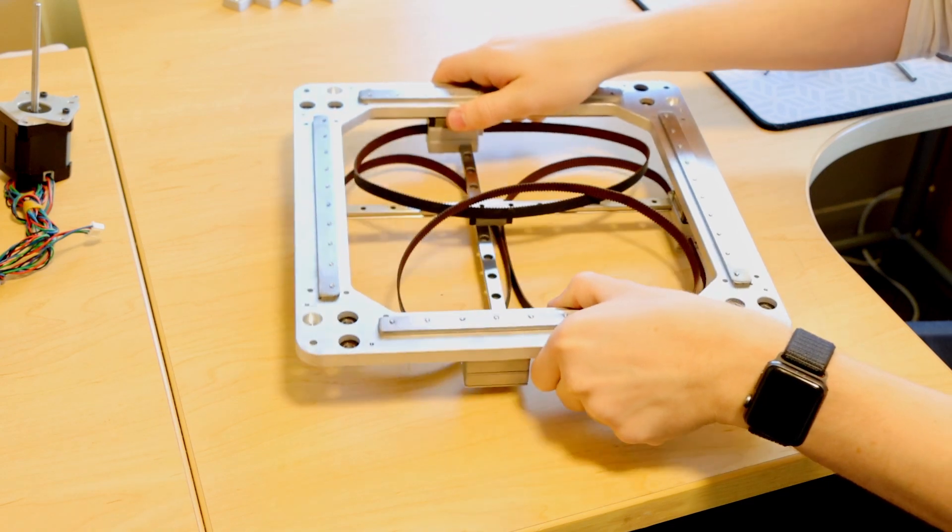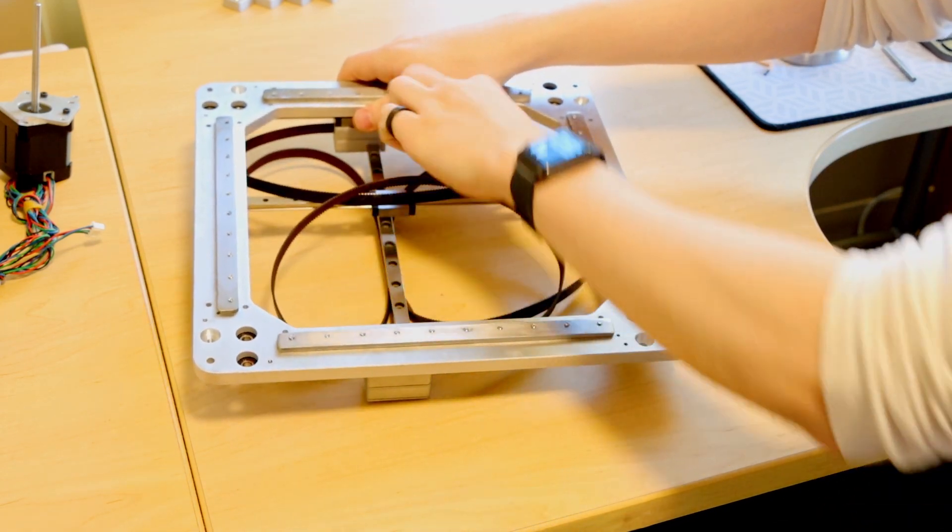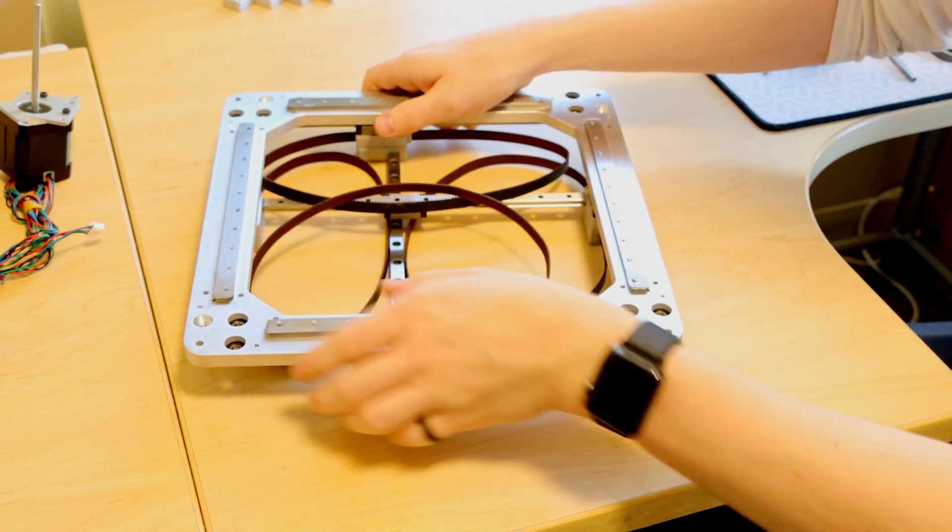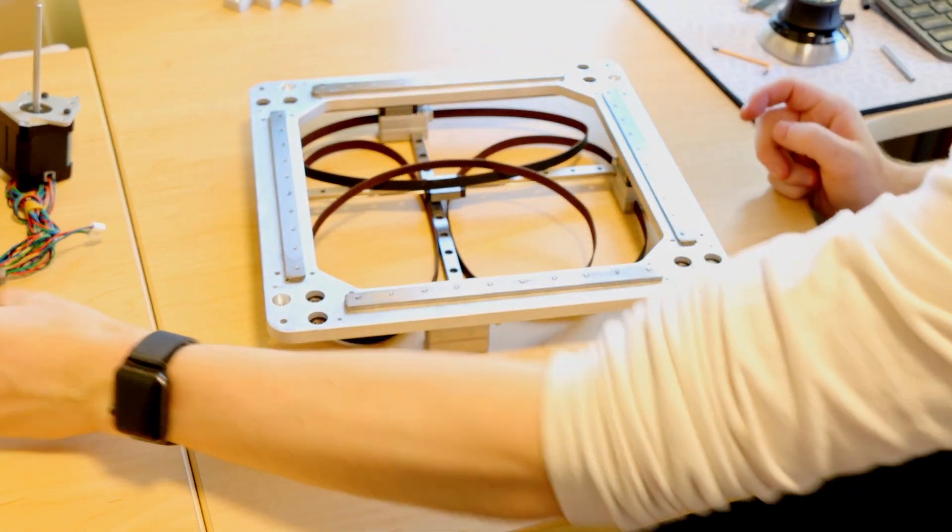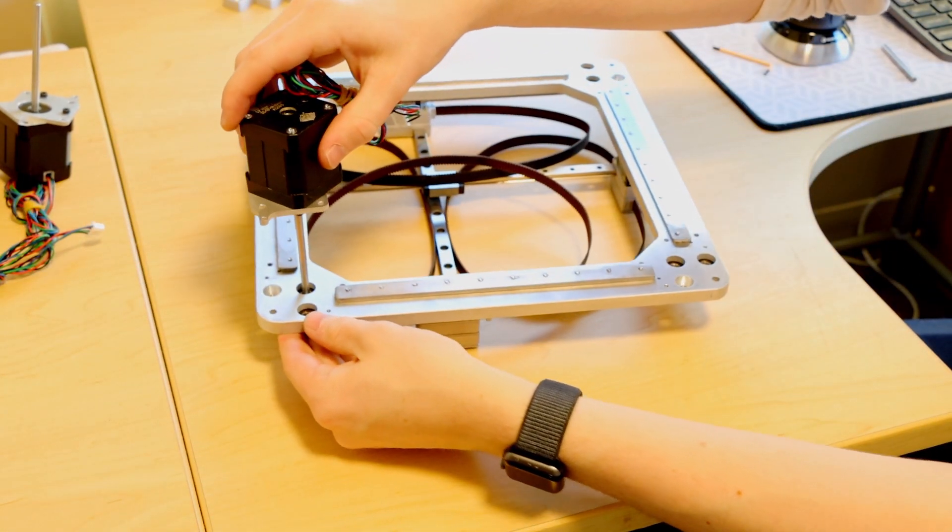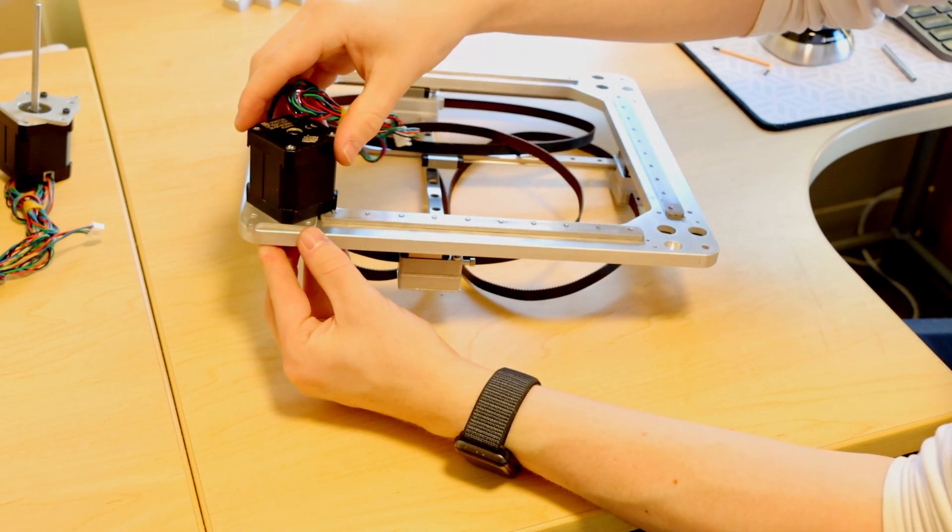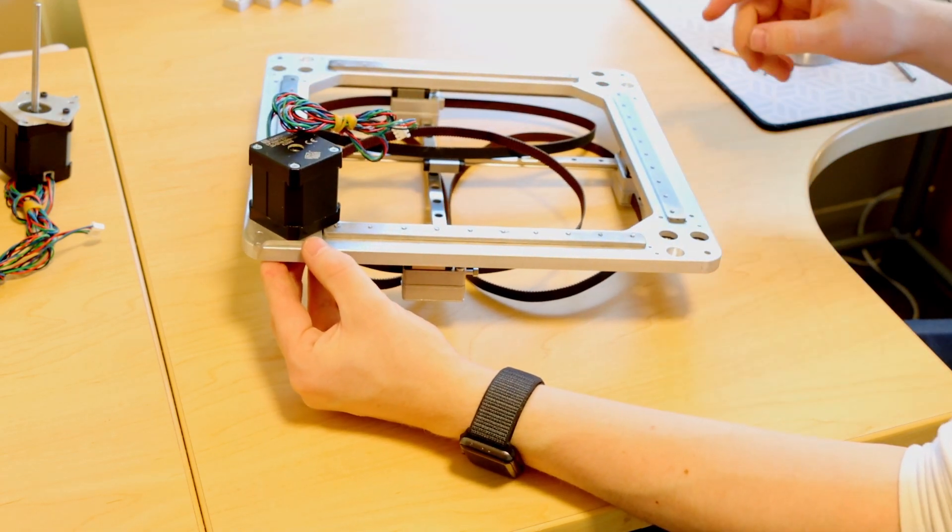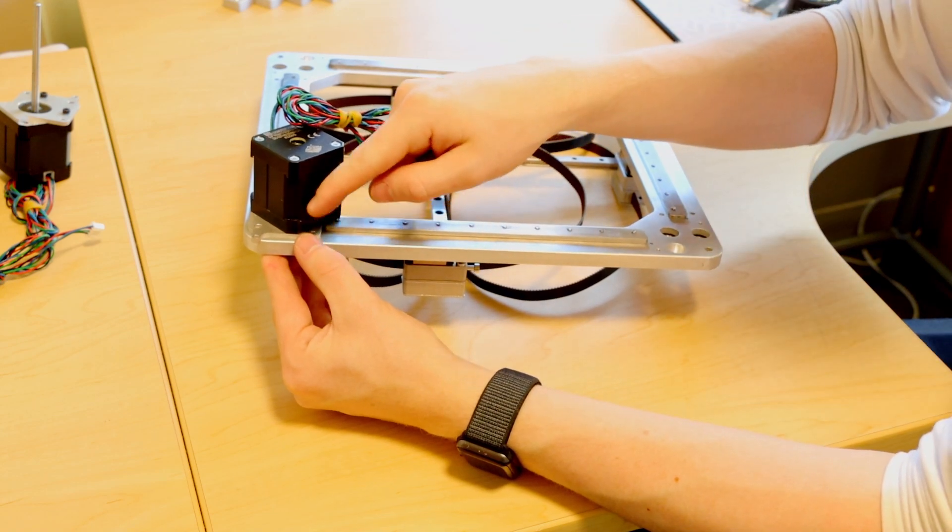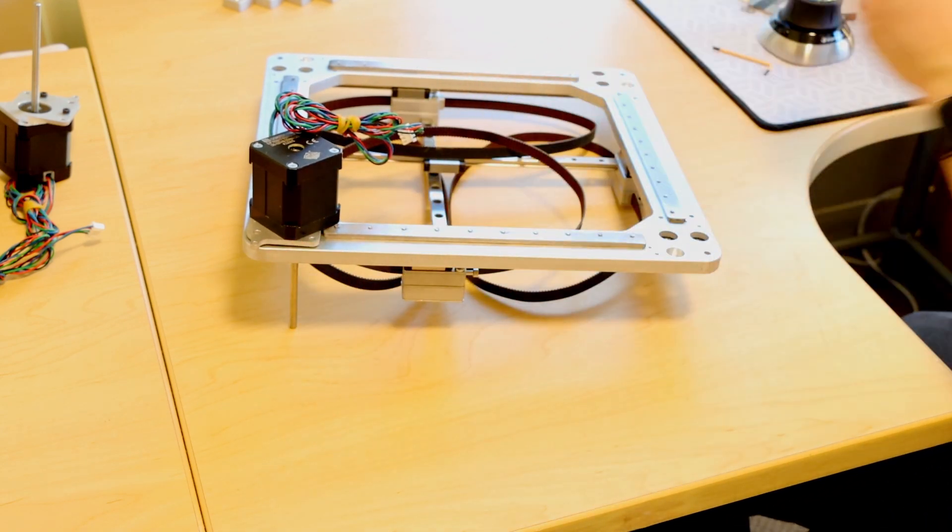So now we can take our gantry and flip it upside down. Just like that. And now we can actually take these motors and drop them right into the first bearing slot. And now we'll use some M3 by 10mm screws to secure it.